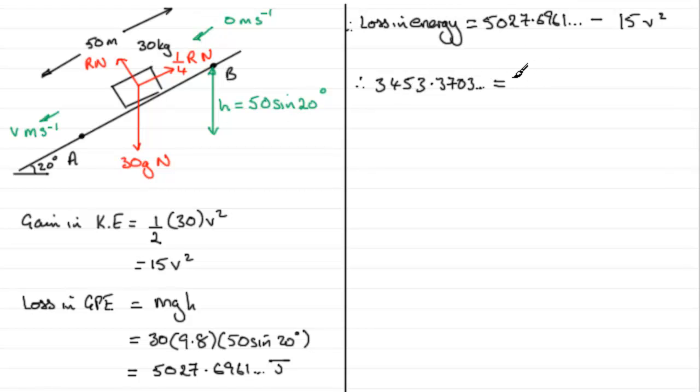must equal this quantity. So we can just write that in as 5027.6961 and so on, minus 15v squared. So we've got a simple equation here, which we just need to rearrange. We've got the 15v squared then, if we add it to both sides, and if we subtract this value,